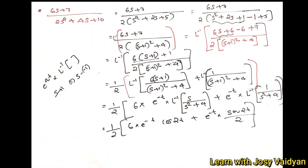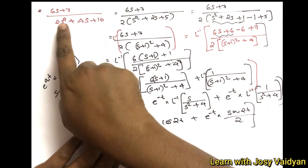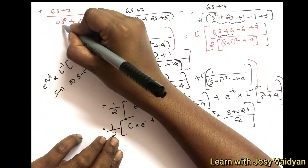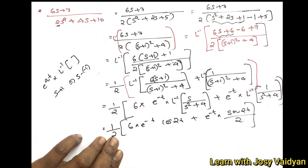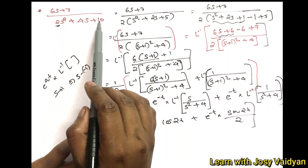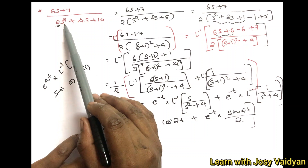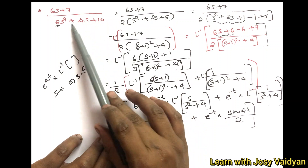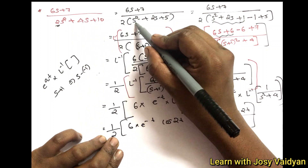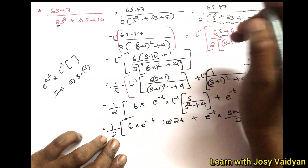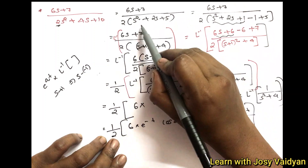The next problem is 6s plus 7 divided by 2s squared plus 4s plus 10. Since the coefficient of s squared must equal 1, we factor out 2: we write 6s plus 7 divided by 2 into s squared plus 2s plus 5. That is 2 into 5 equals 10, confirming the factoring.